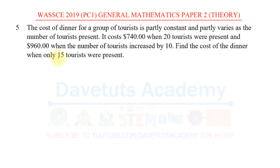We have to find the cost of the dinner when only 15 tourists were present. To solve this problem, we need to understand where it's coming from. When we see that something is partly constant and partly varies, we know that we are talking about variation. This is a question of variation, and we will first identify the formula to express what we are told.